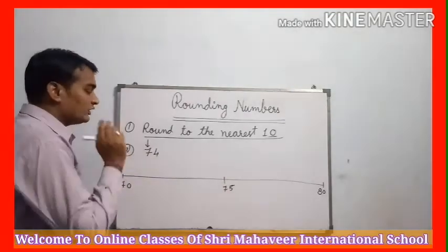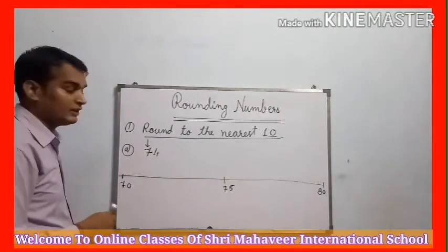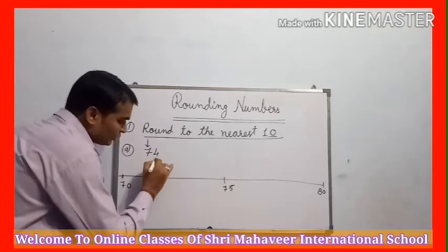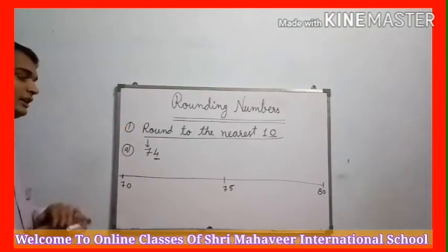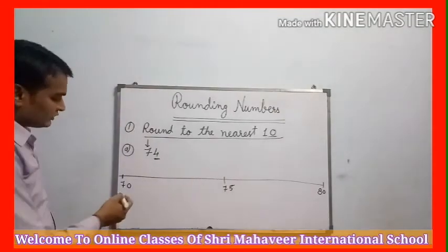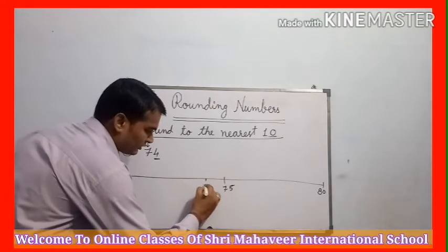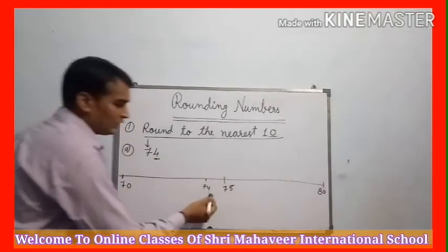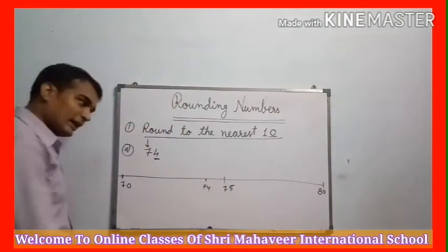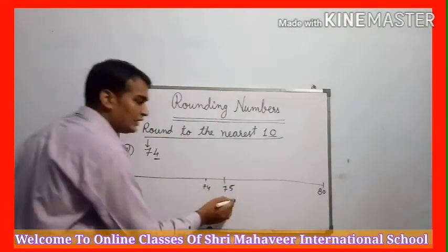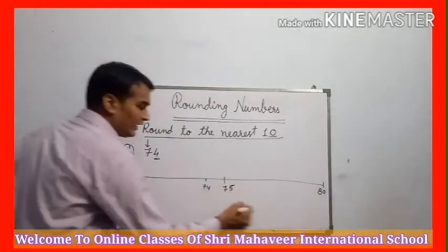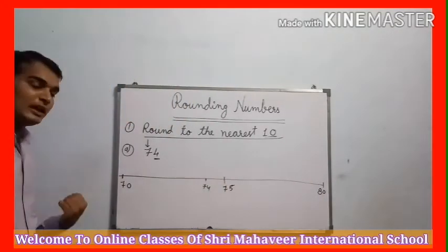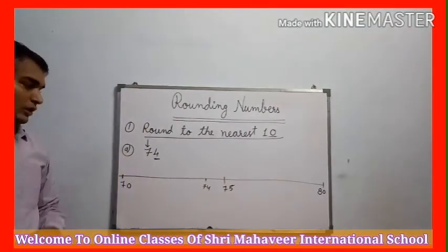जब nearest 100 find करते हैं तो nearest 100 में 100 place से just before वाला number check करते हैं. यहाँ पर हमें nearest 10 find करना है, तो 10s place से just पहले वाली digit check करेंगे. 74 के nearest 70 है या फिर 80 है? अगर 75 होता तो वो भी 80 की तरफ जाता. तो अब देखते हैं - 74 के जादा near, जादा पास क्या है?